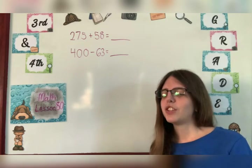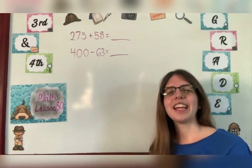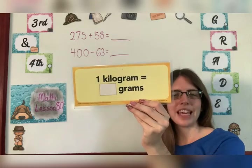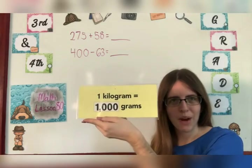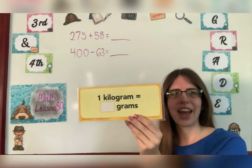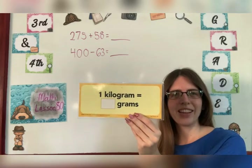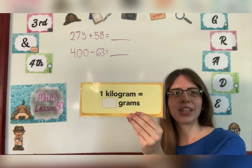Okay. So our new measure that we're adding is 1 kilogram equals 1,000 grams. Let's say that three times together. One kilogram equals 1,000 grams. One kilogram equals 1,000 grams.